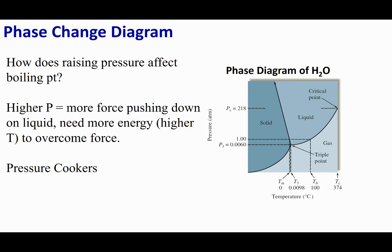Let's see how pressure affects the boiling point — something we've already discussed, but now we can confirm it with the diagram. If I'm at pressure A and I want to find the boiling point, I go across and see where I cross the liquid-gas barrier, then drop down to read the temperature at which boiling occurs at pressure A.